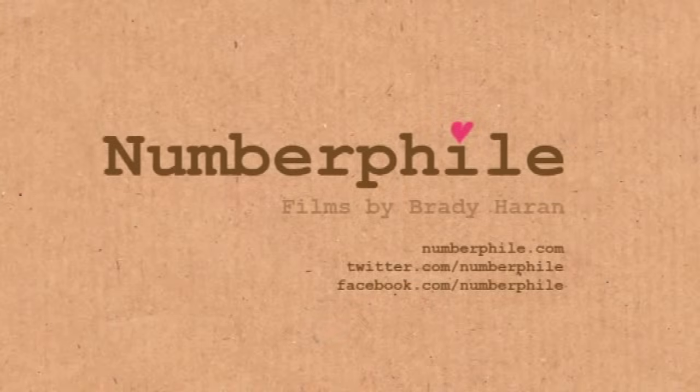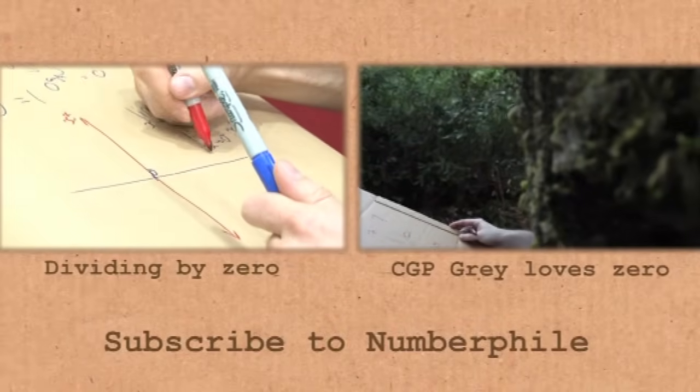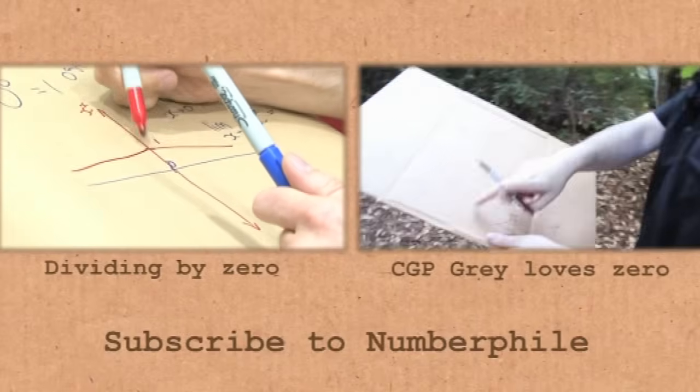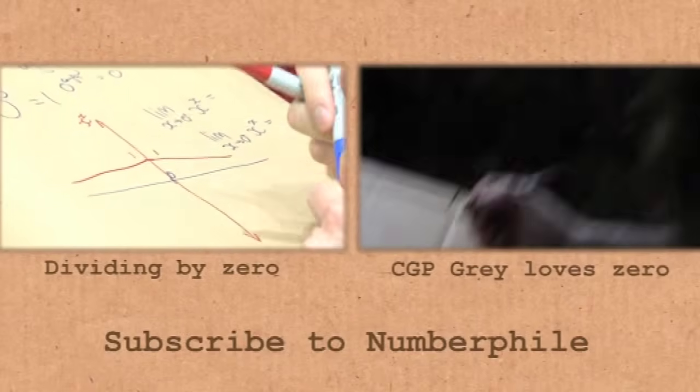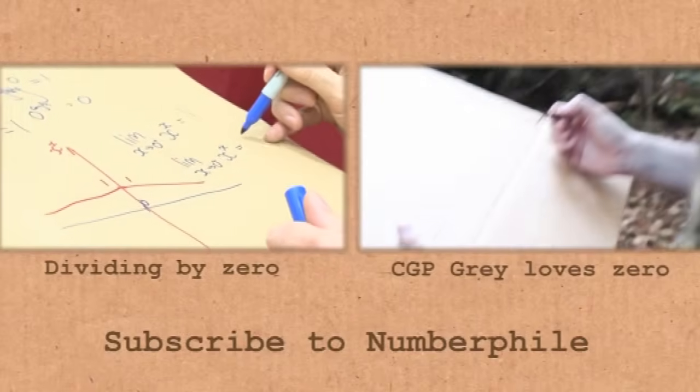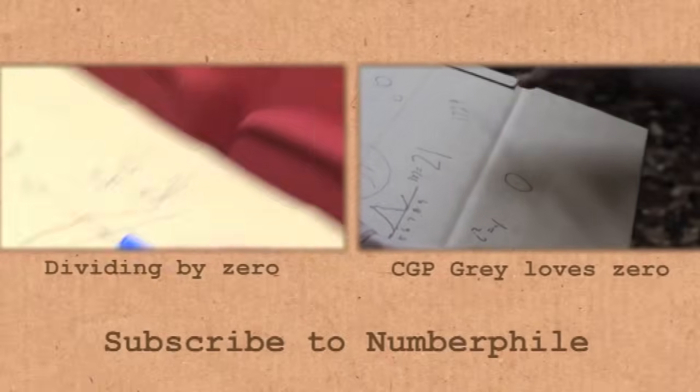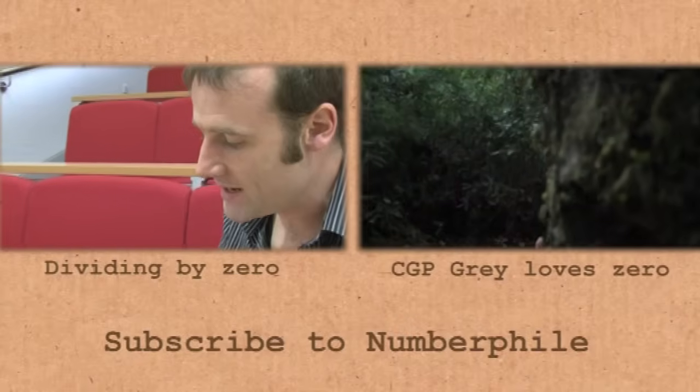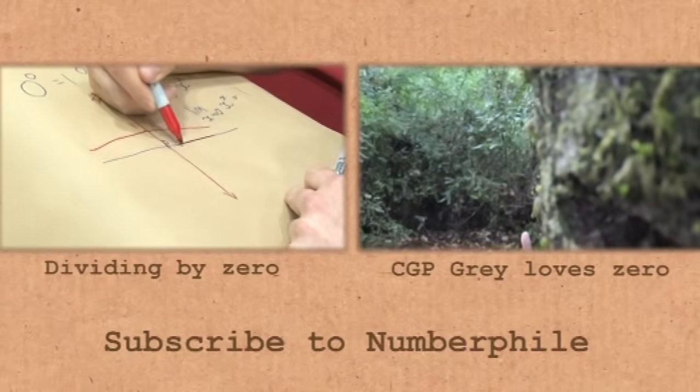I'm CGP Grey, and my favorite number is zero. I like zero because it's not an obvious number. You can have counting systems where there's one thing, two things, three things, four things. But mathematics existed for a long time without having a zero as part of it. So it's a number, but it also isn't anything in and of itself.